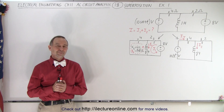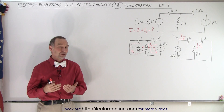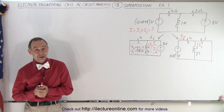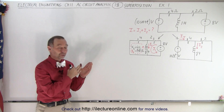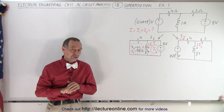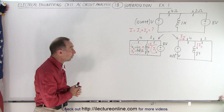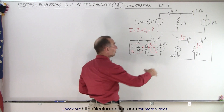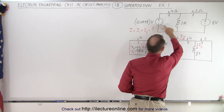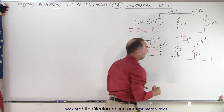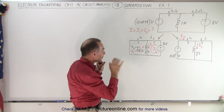Welcome to iLectroOnline. Now let's take a look at an example of a superposition type problem. The methodology we're going to use to solve for the current in the circuit is called the superposition method. What that means is that we have this initial circuit right here which contains two voltage sources, and we're going to split it apart into two separate circuits.